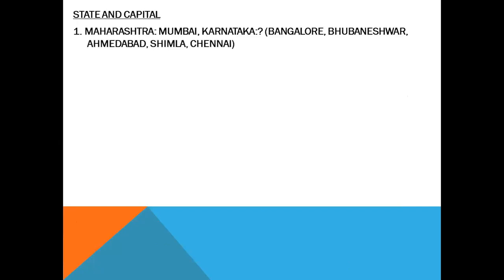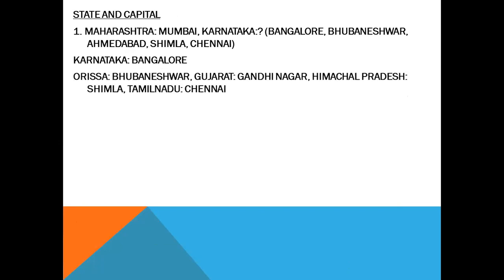Next: state and capital. They will ask some states and their capitals. Maharashtra — Mumbai. Karnataka — what? Options: Bangalore, Bhubaneswar, Ahmedabad, Shimla. Bangalore is the capital of Karnataka. Bhubaneswar is the capital of Odisha. Gandhinagar is the capital of Gujarat. Shimla is the capital of Himachal Pradesh.